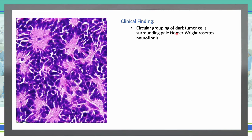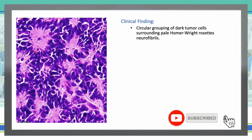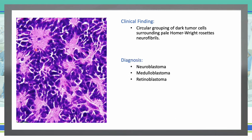Next, circular grouping of dark tumor cells surrounding pale neurofibrils — Homer Wright rosettes. These are small blue cell tumors from the neural crest and ectoderm. Where are we going to find those? We are going to see those in neuroblastoma, medulloblastoma, and retinoblastoma.